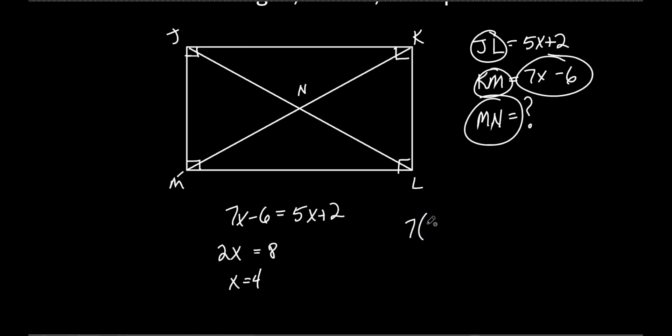So let's take that 4 and plug it in. So I'm just rewriting this 7x-6. So we just plug it in and we'll find the whole entire thing. Why do I want to find the whole entire thing? They don't even ask me to find the whole entire thing. What's the purpose of me finding KM?